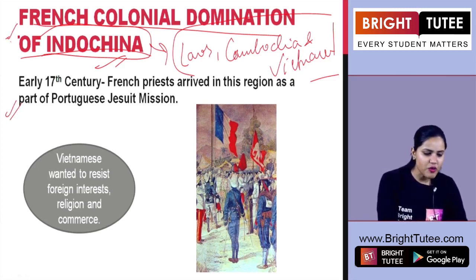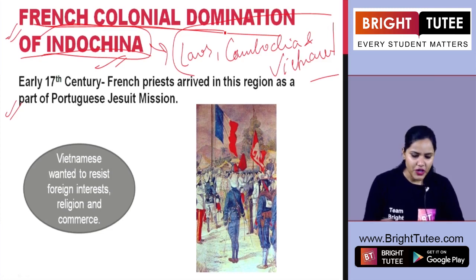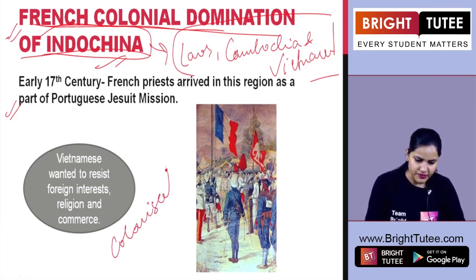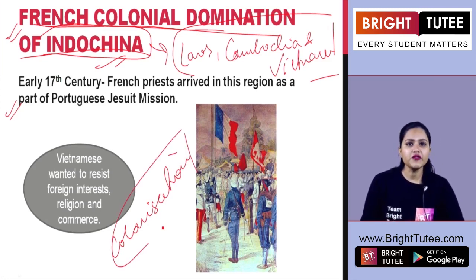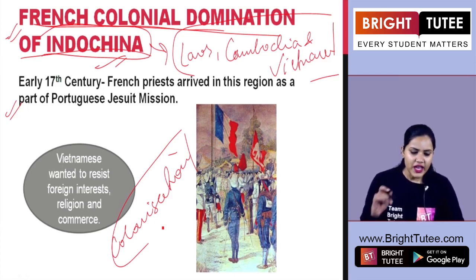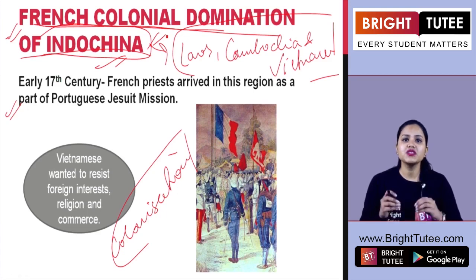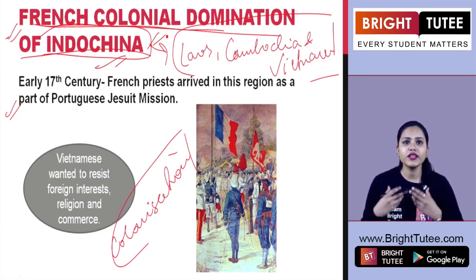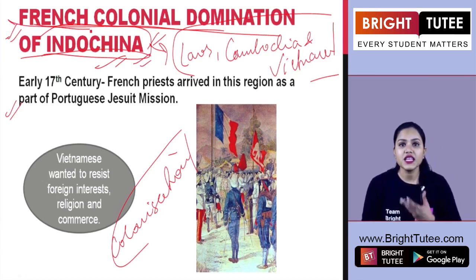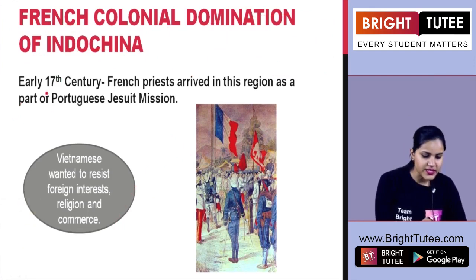As the topic suggests, we are going to talk about French colonial domination. If you remember, you have learned about colonization in India under British colonial rule. Here also in Indochina, we see that European powers came to establish their colonies, to have political domination and to make a lot of profit. The French were successful in establishing colonial rule in Indochina in the early 17th century.